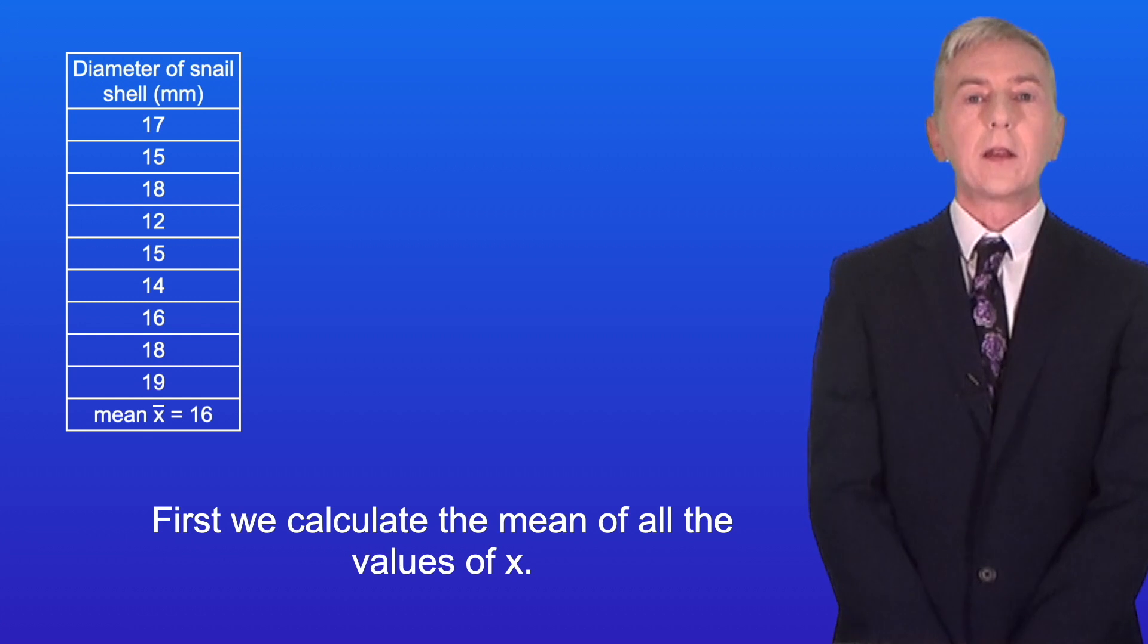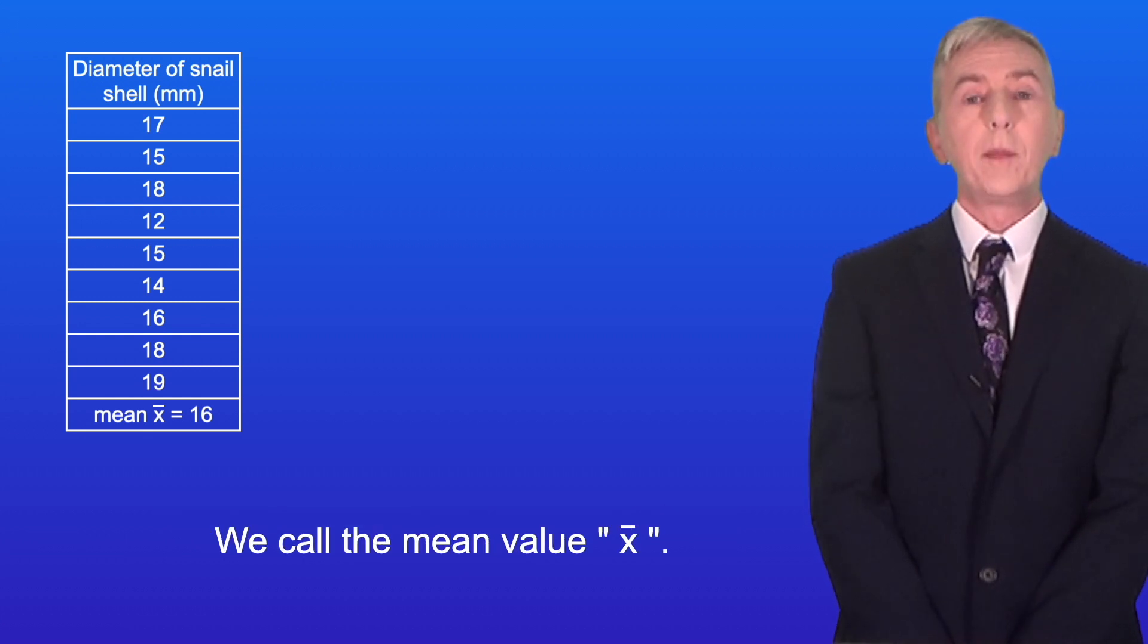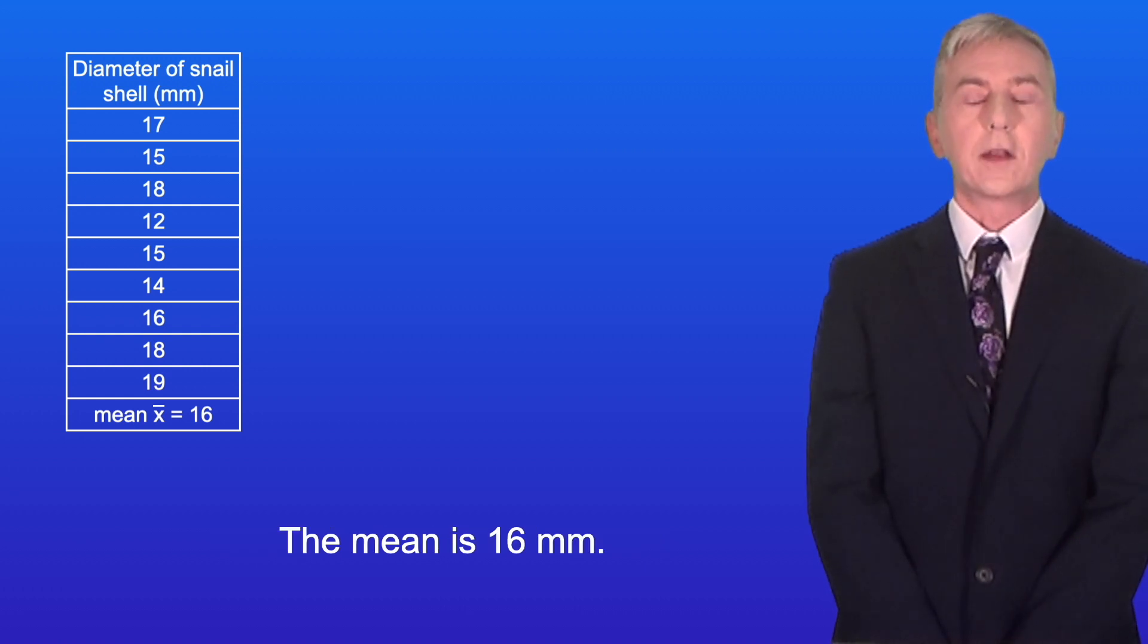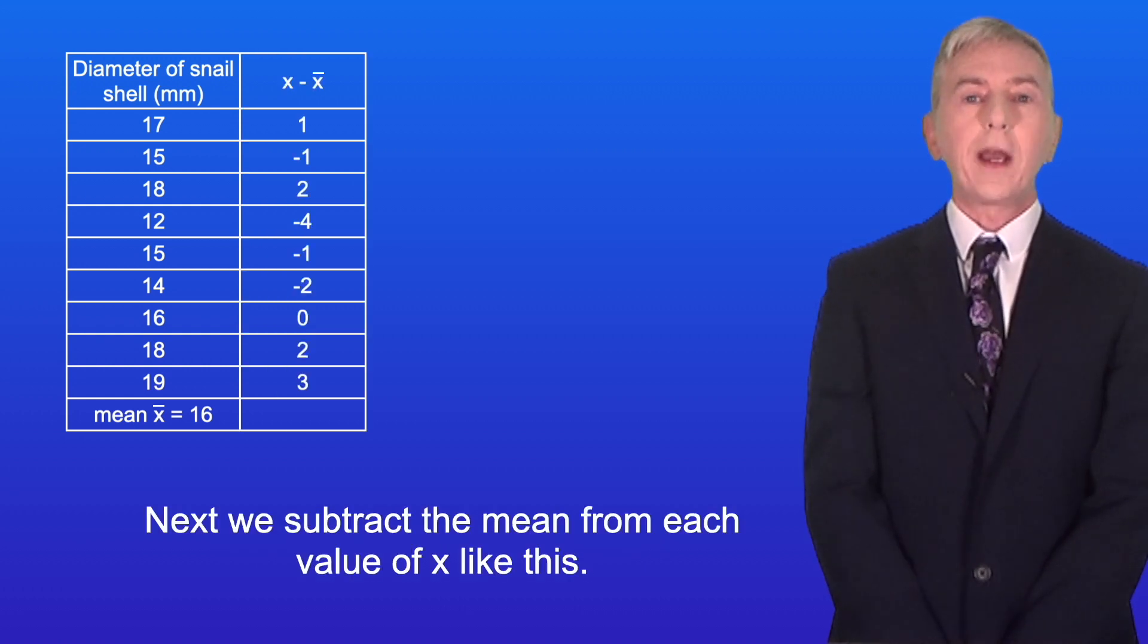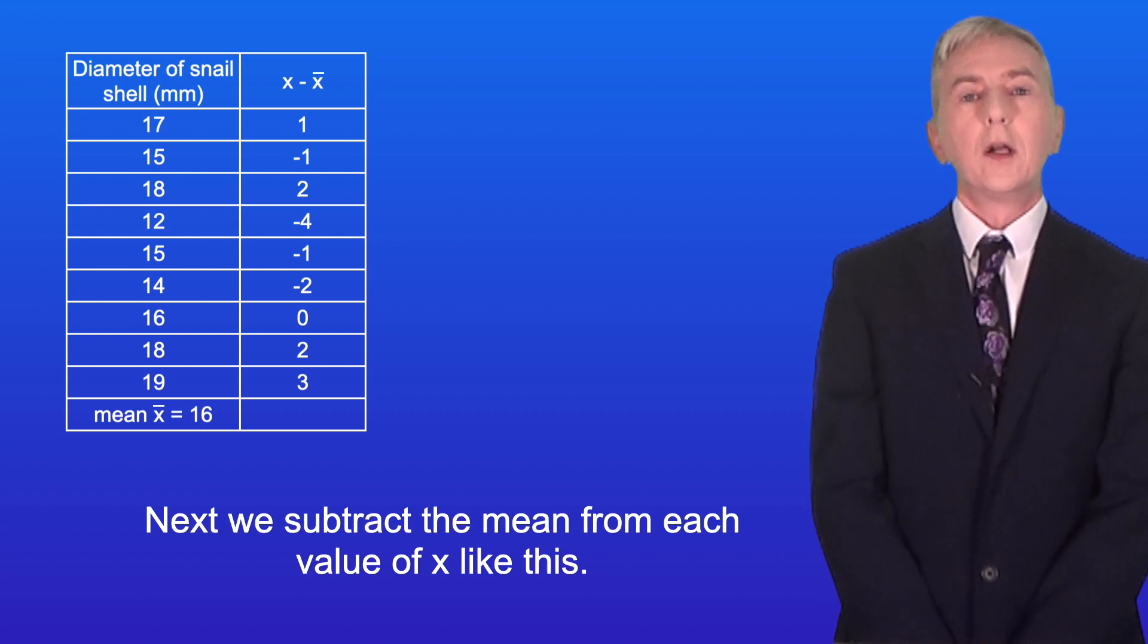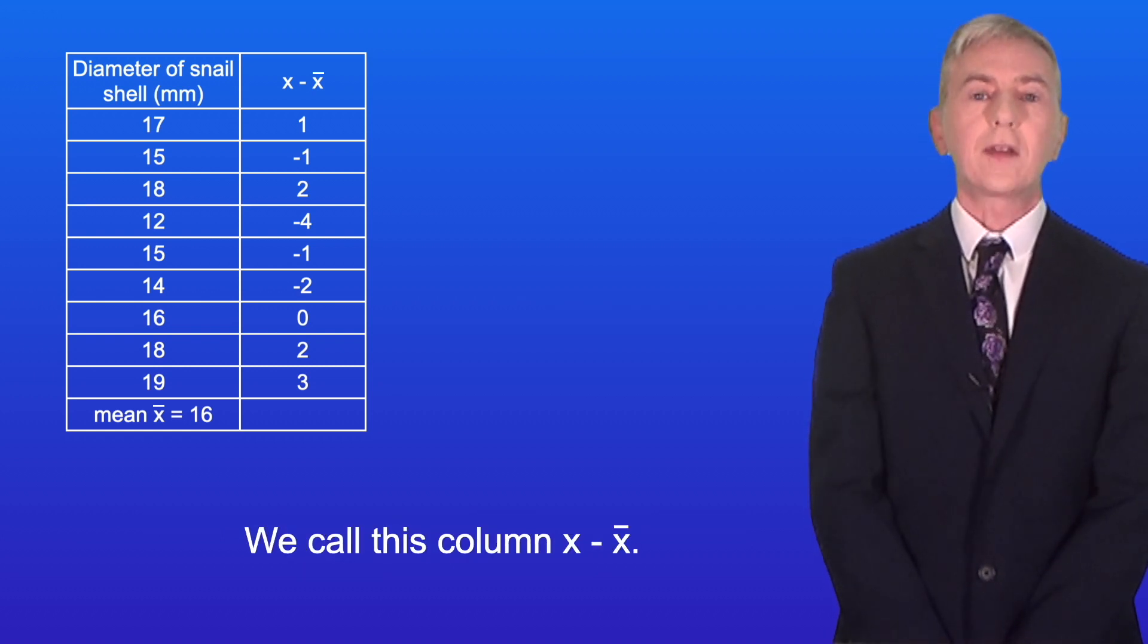First we calculate the mean of all the values of x. We call the mean value x-bar. The mean is 16 millimeters. Next we subtract the mean from each value of x like this. We call this column x minus x-bar.